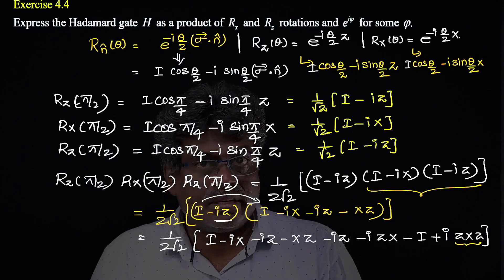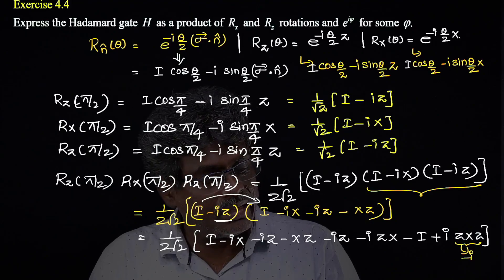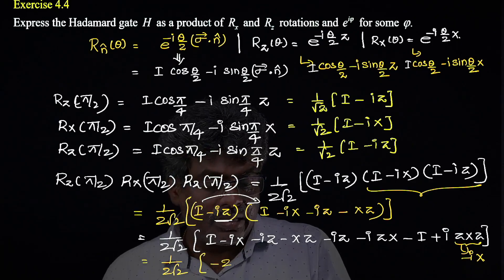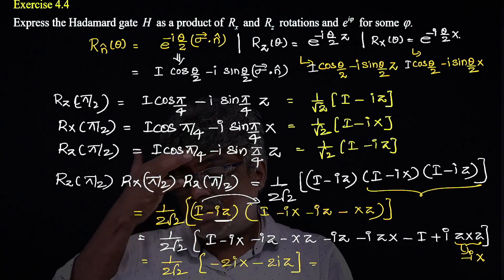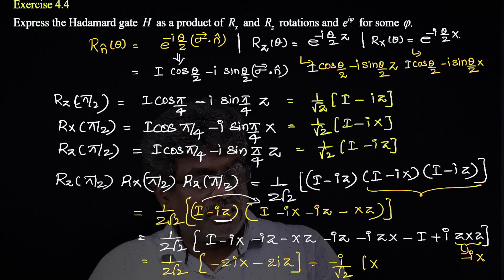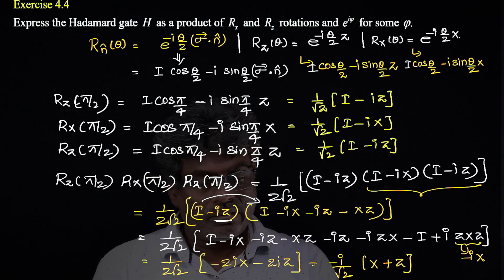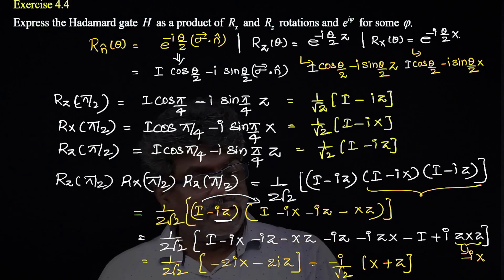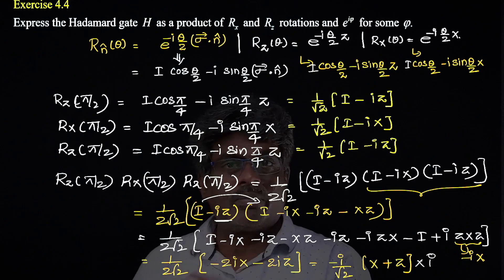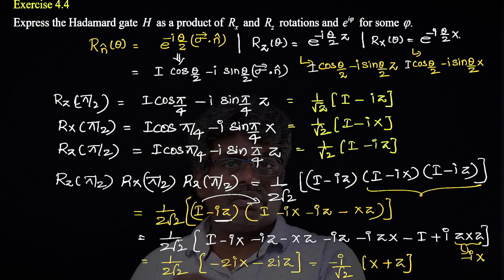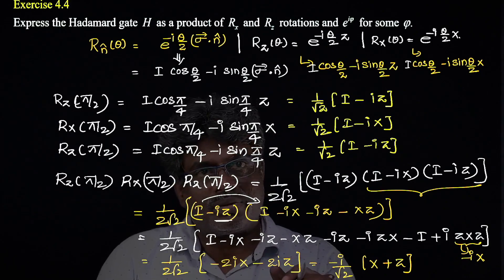Substituting all these results, we get (1/(2√2)) times (-2iX - 2iZ), which simplifies to (-i/√2)(X + Z). Multiplying both sides by i, the left side becomes i · Rz(π/2) · Rx(π/2) · Rz(π/2), and the right side gives (1/√2)(X + Z), which is nothing but the Hadamard gate. This is an alternate way to show that the Hadamard gate is the product of Rx and Rz rotations.